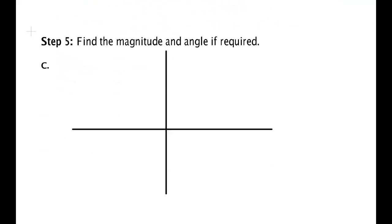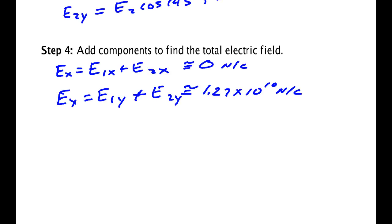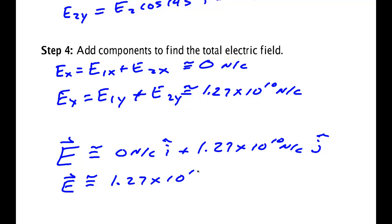Alright. So if you want to find the magnitude and the angle, in this case it's very simple. You're just going to find, well I might go ahead and write the vector. Let's go ahead and write it in Cartesian form, because maybe they'd be happy with that, that's all they ask. If all they ask to do is Cartesian form, it's 0 newton per coulomb i-hat plus 1.27 times 10 to the 10 newton per coulomb j-hat. And since the x component is 0, you could just write 1.27 times 10 to the 10 newton per coulomb j-hat.